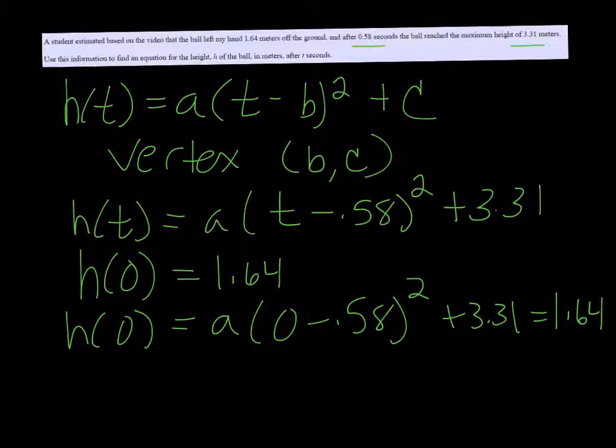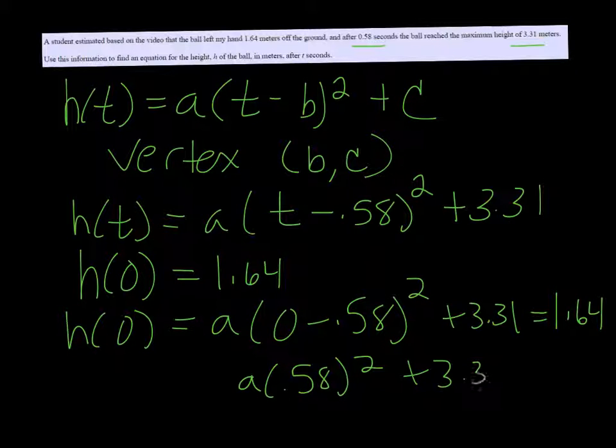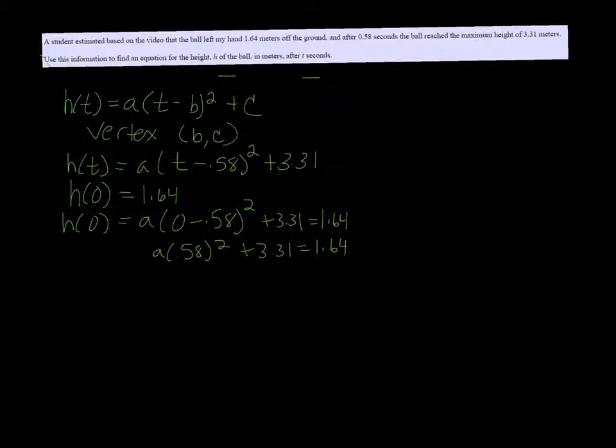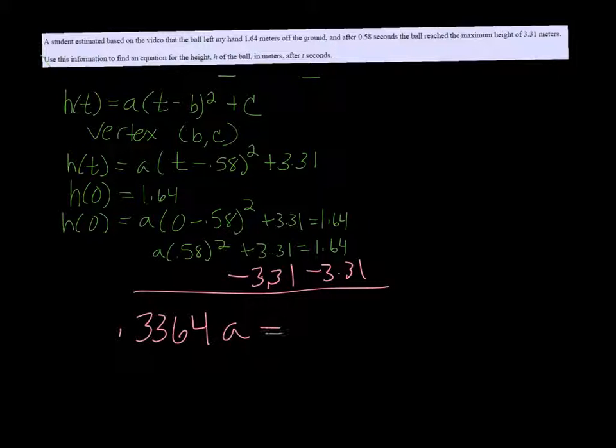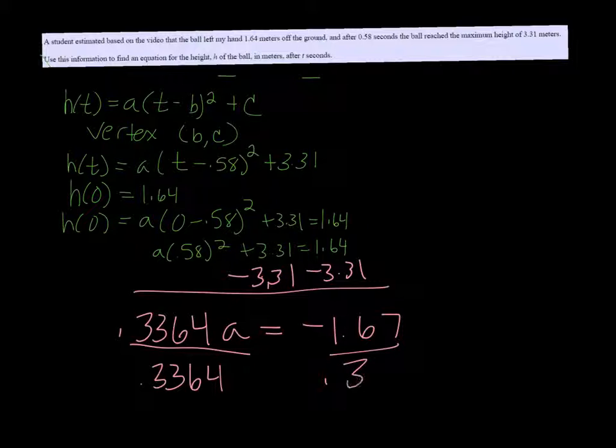0 minus 0.58 is just negative 0.58. If we square the 0.58 and subtract 3.31 on both sides, we get 0.3364a equals negative 1.67. Lastly, divide both sides by 0.3364, and we get that a is negative 4.9643.